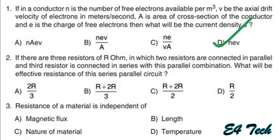Second question: if there are three resistances of R ohm, in which two resistors are connected in parallel and the third resistor is connected in series with this parallel combination, what will be the effective resistance? Two equal resistors R in parallel give R/2. Then R/2 plus R = 3R/2. Option C: 3R/2.